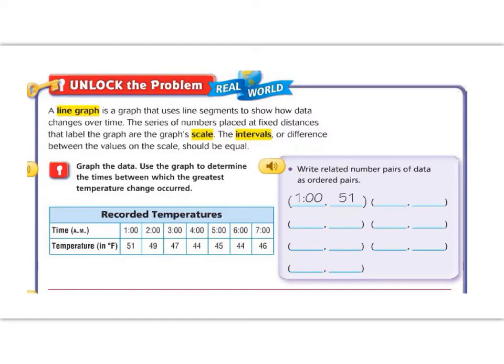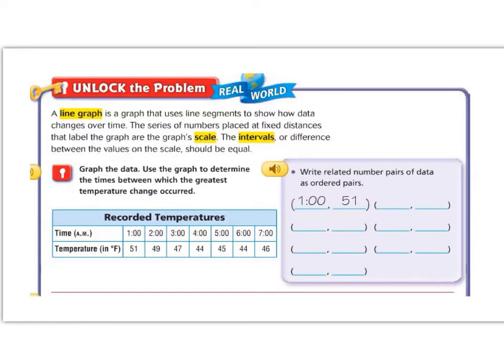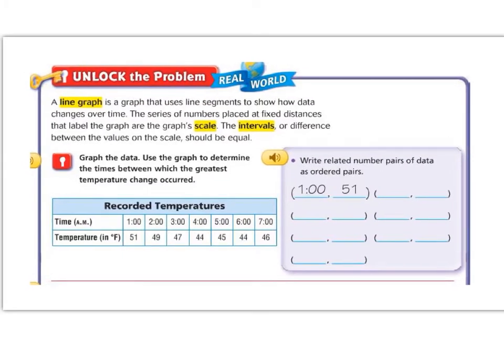We're going to use the time as our x-axis and we're going to use the temperature as our y-axis. So you can see they've done one o'clock for us. At one o'clock it was 51 degrees, so at two o'clock it was 49 degrees and I'm looking right here to get those numbers.